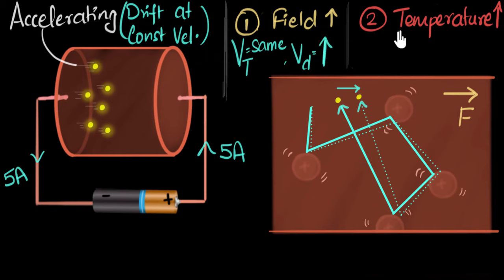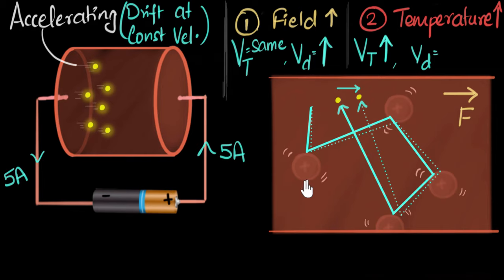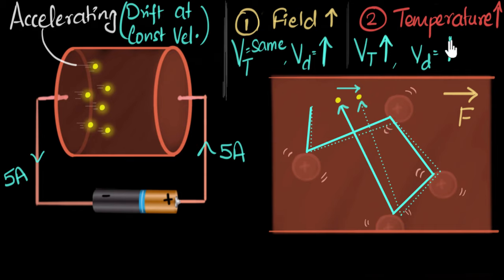Second question: I keep the field the same but increase the temperature. The thermal velocity will increase — more heat energy means electrons move faster. What about drift velocity? The accelerating force remains the same, but because thermal velocity has increased, the random motion is greater, so there will be more collisions. More collisions mean a stronger opposing force. As a result, the drift velocity will decrease. That means the electrons drift slower, and the current will decrease — which is indeed what we observe with the thermal effects of electricity.